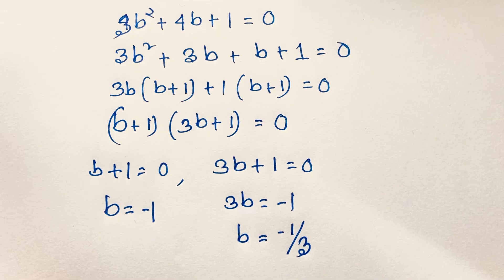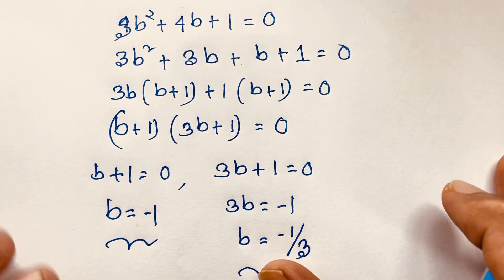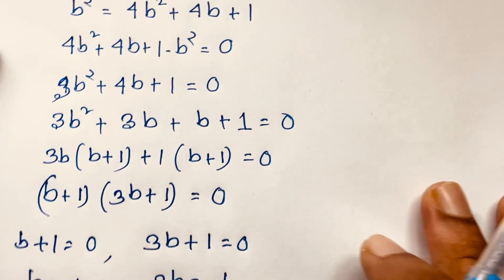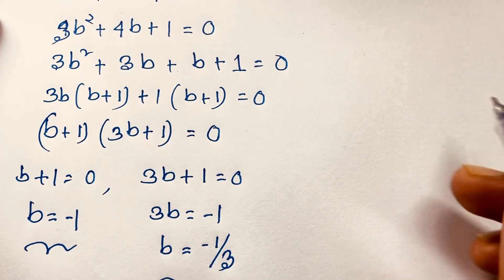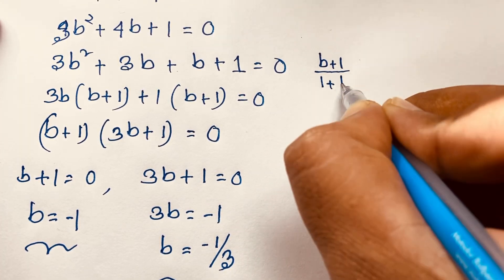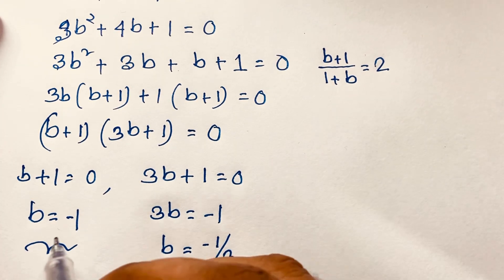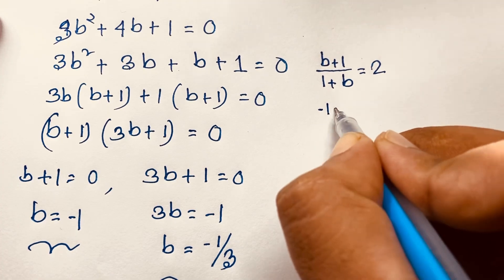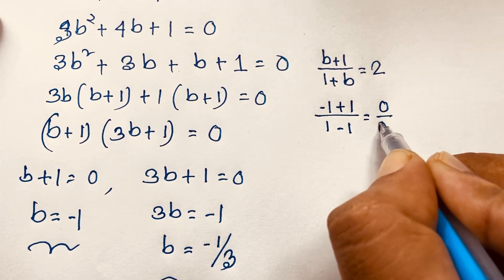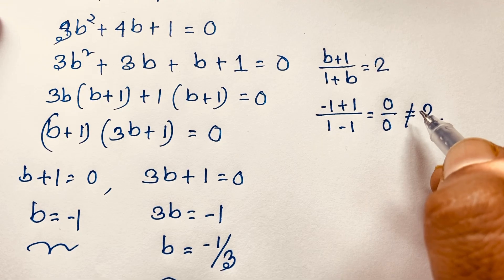We have two solutions: b = −1 and b = −1/3. Let's verify b = −1 first. Substituting into (b + 1)/(1 + b): (−1 + 1)/(1 − 1) = 0/0, which cannot equal 2. So the left-hand side and right-hand side are not equal.